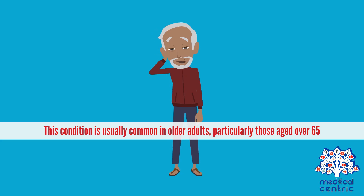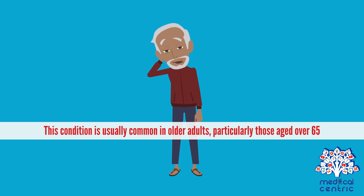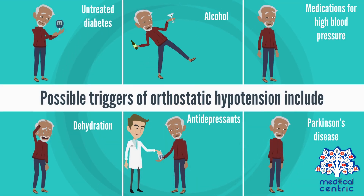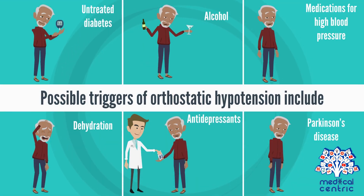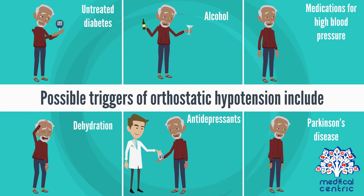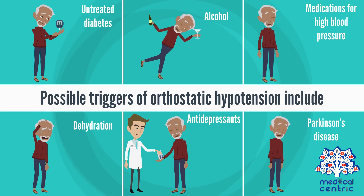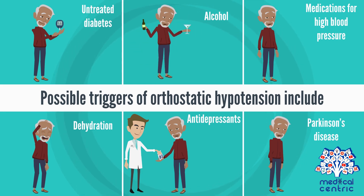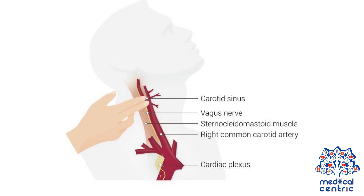Orthostatic hypotension is usually common in older adults, particularly those aged over 65. Possible triggers include untreated diabetes, alcohol, medications for high blood pressure, dehydration, antidepressants, and neurological conditions such as Parkinson's disease, as well as carotid sinus syndrome.